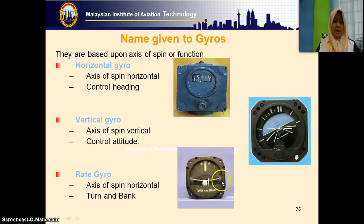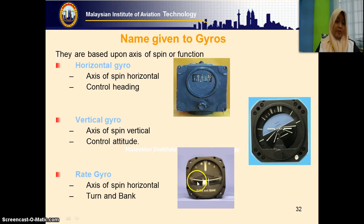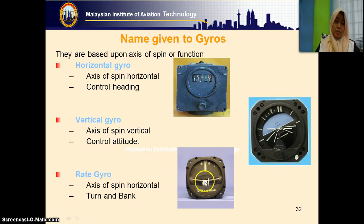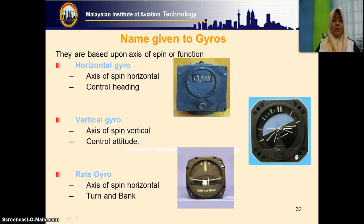The last one is the turn and bank indicator, which indicates aircraft turn — turn to the left, turn to the right — and also the condition of the bank. If the aircraft turns to the left, we have the turn needle and also the ball, which is called the inclinometer. When the aircraft turns to the left, the ball must be in the center. If the ball moves outside the center, the aircraft might be in a slip or skid condition. This turn and bank indicator uses a rate gyro, and inside this rate gyro, the axis of spin is horizontal.